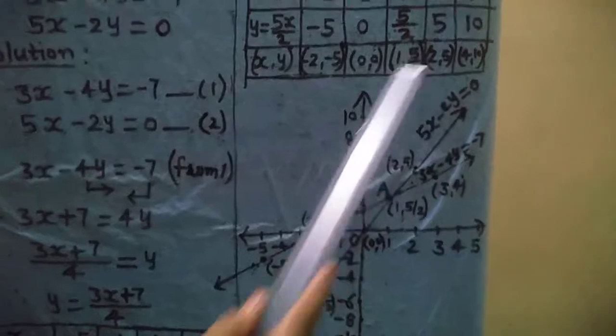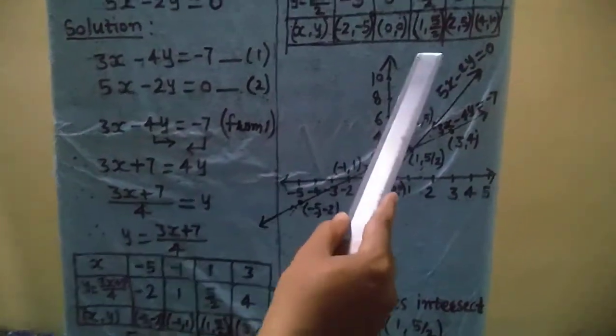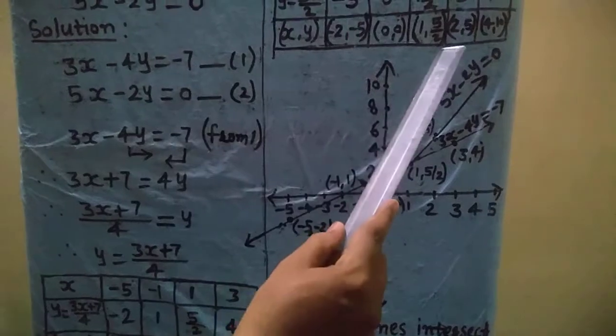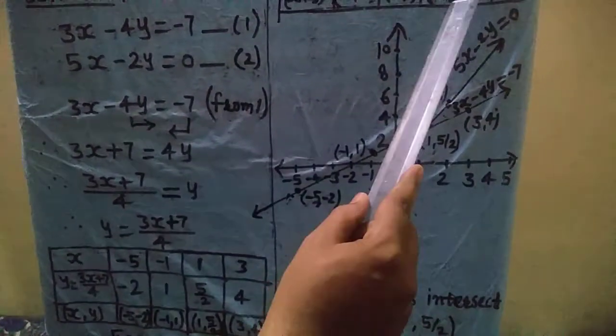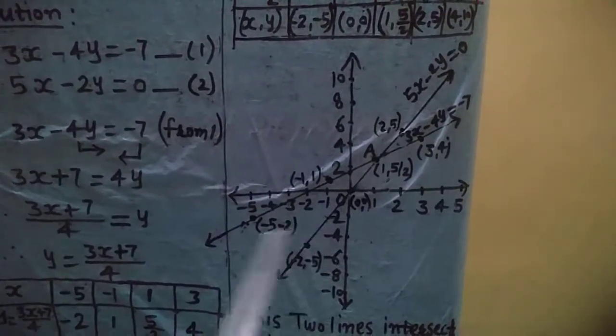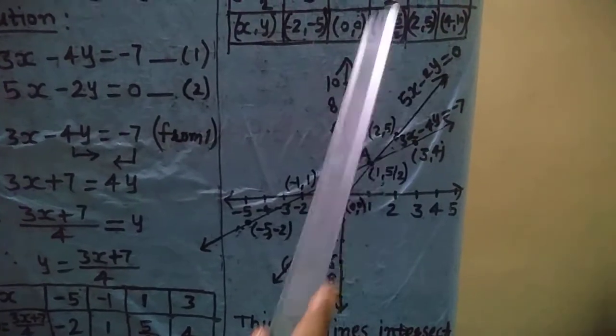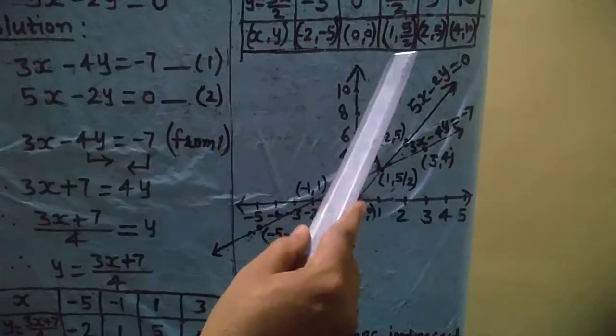Observe the two tables. One coordinate, (1, 5/2), appears in both tables — it is the same in both. This is our point of intersection of the two graphs. Note that it is not necessary that the point of intersection must be present in the observation table.